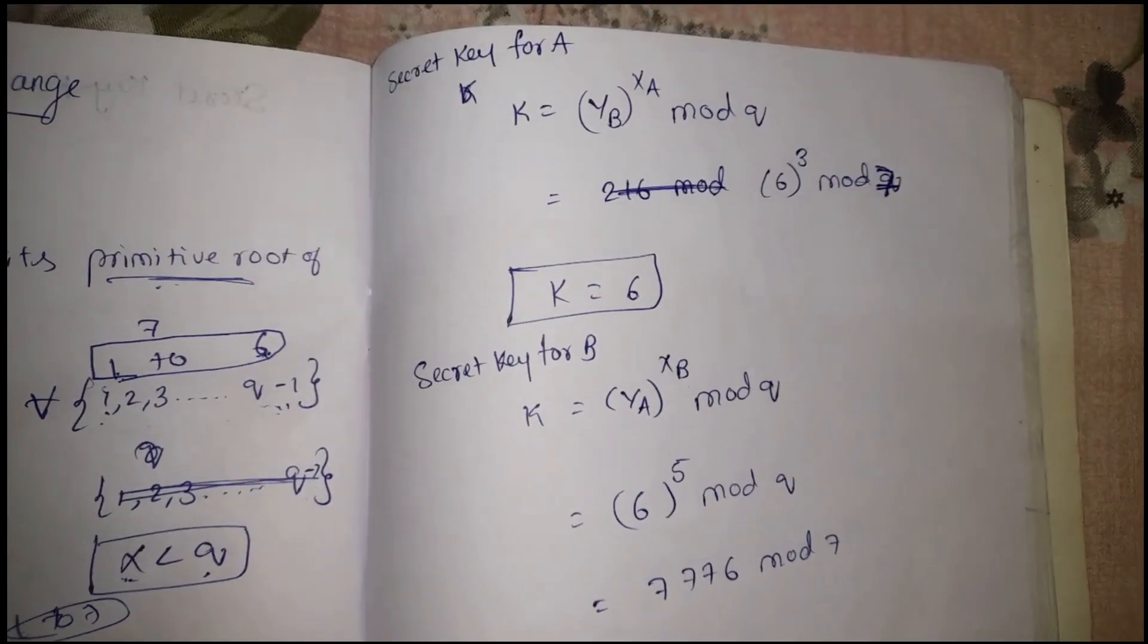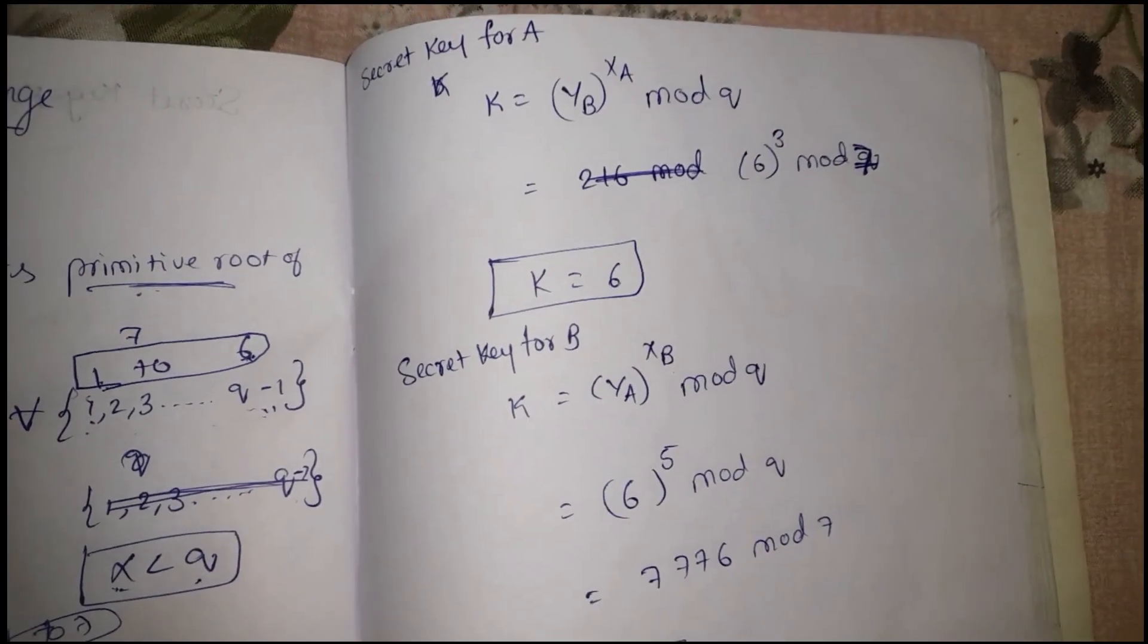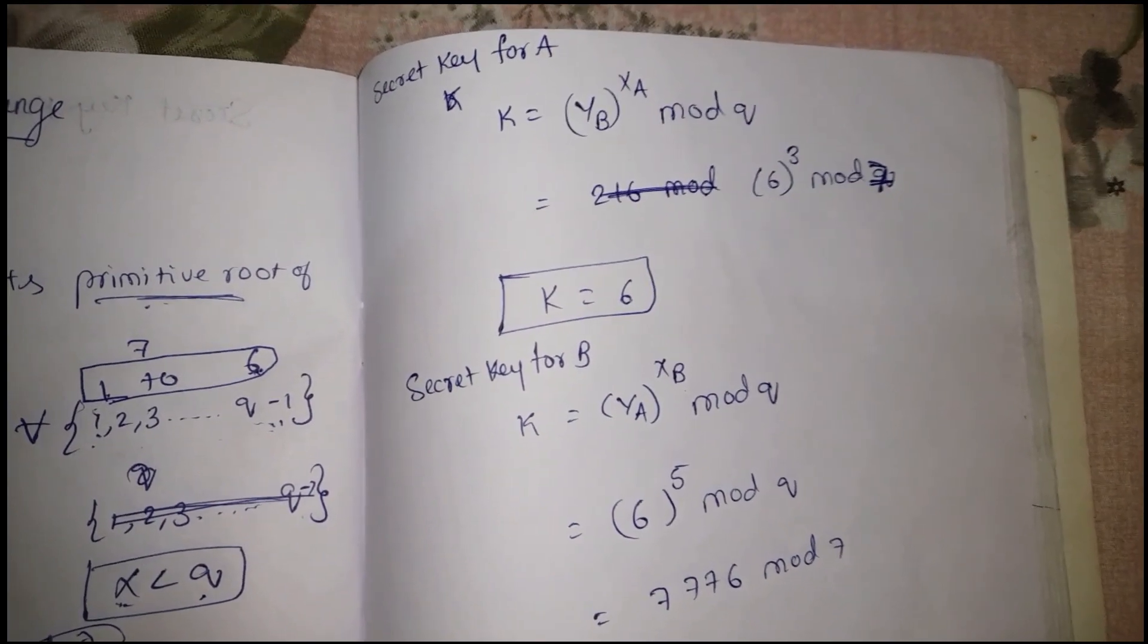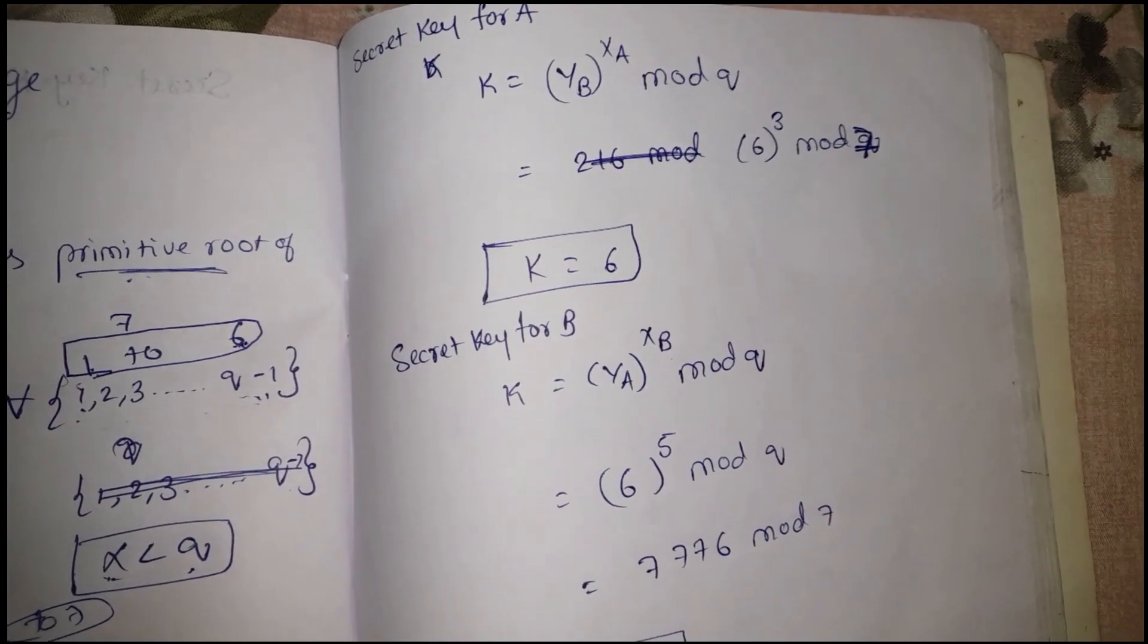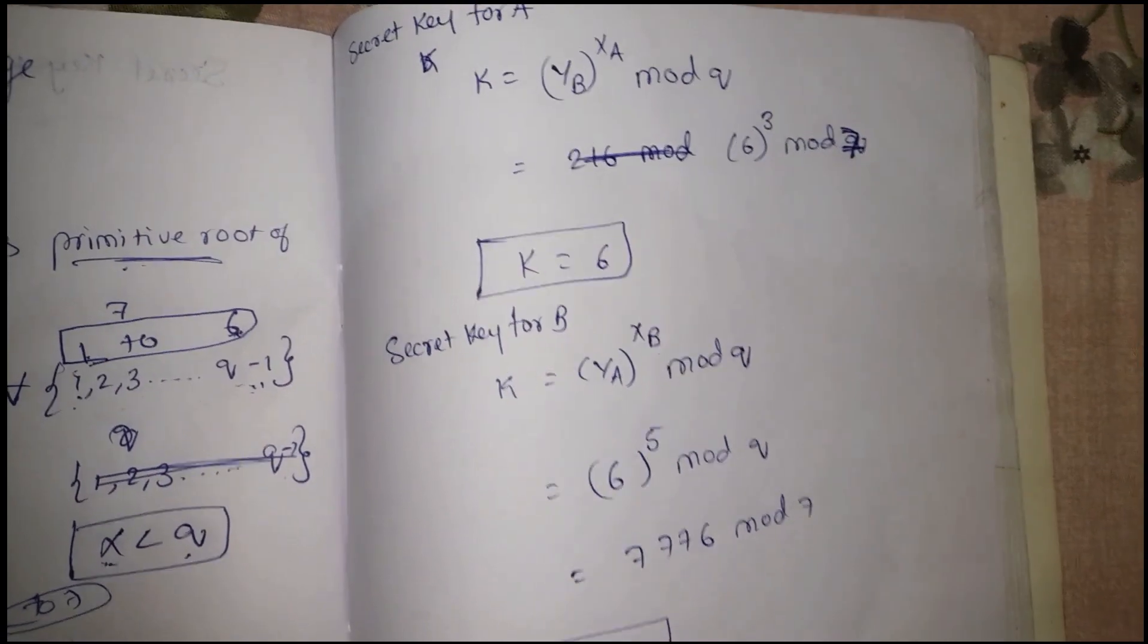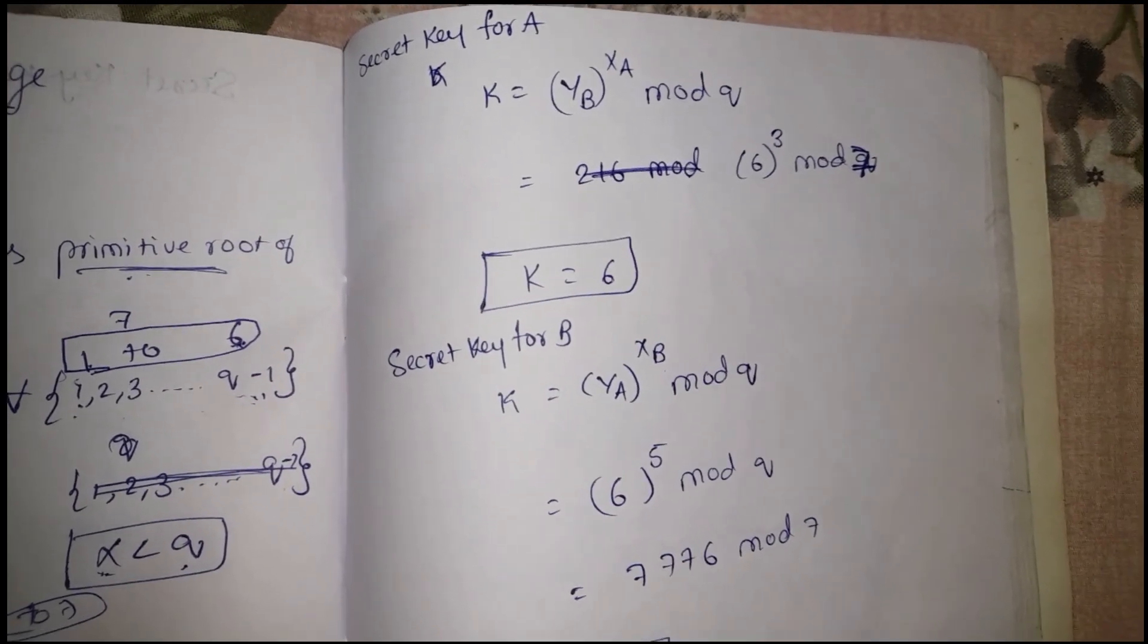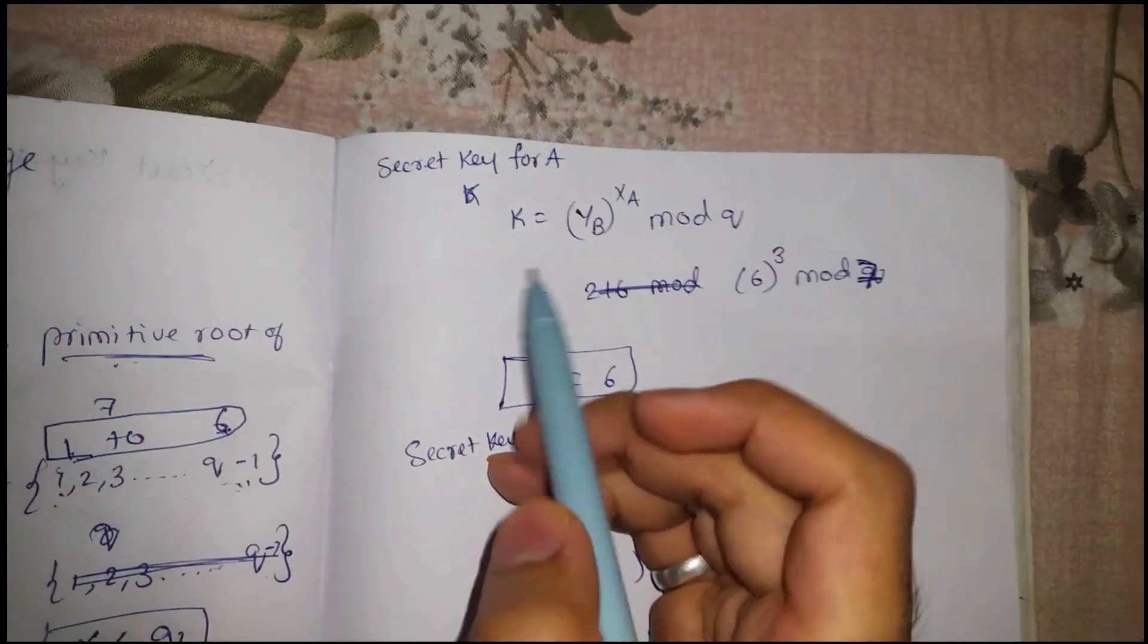What this Diffie-Hellman key exchange algorithm does is it does not share public and private keys directly. This algorithm makes use of public key and private keys to generate another secret key which will be further exchanged between A and B. Observe this carefully.